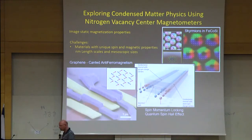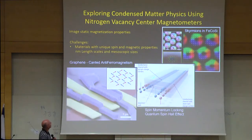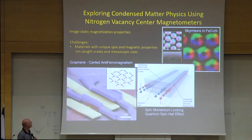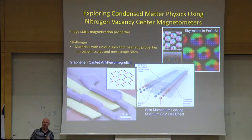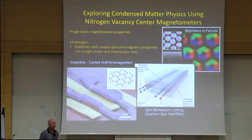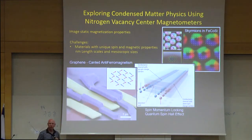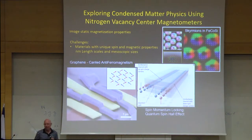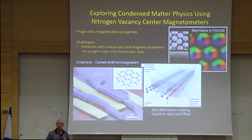If one considers the ground state of a system, here you see a few examples. This is a sheet of graphene where, in a quantum Hall regime at zero density, it is predicted to have a canted antiferromagnetic order. This system describes a quantum spin Hall effect where in equilibrium, in its ground state, it carries steady-state spin currents that do not have any charge consequences.